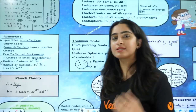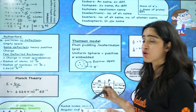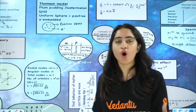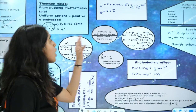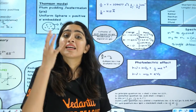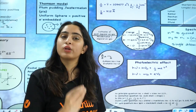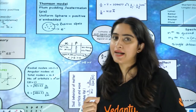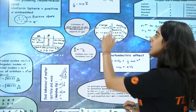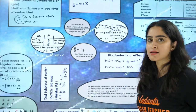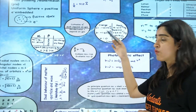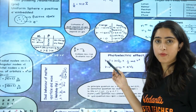Let us start the topic with the subatomic particles, that is electron, proton, and neutron discoveries. Electrons are cathode rays that are independent of the gas. Protons are anode rays — anode rays are gaseous ions, so they are dependent on the gas. Electrons were discovered by Thomson, protons by Goldstein, and neutrons by Chadwick. These are their respective charges, masses, and discoverers.